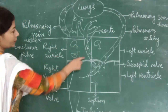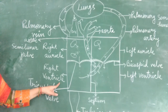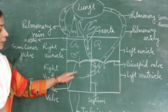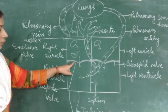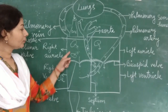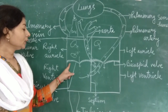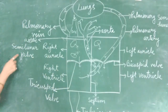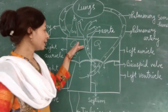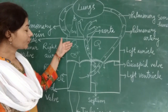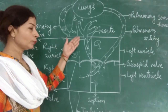This is the right auricle. This is the right ventricle. In between the right auricle and right ventricle you can see this curve-like structure which is known as a valve. Between the right auricle and right ventricle there is a tricuspid valve present. This tricuspid valve is used to prevent backflow of blood, because when blood comes from the auricle to the ventricle it should not go back — that is why there is a valve present to prevent backflow of blood.